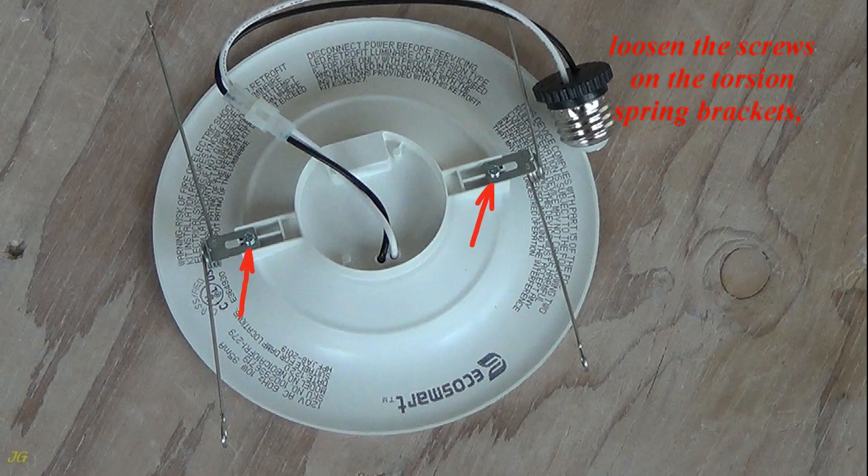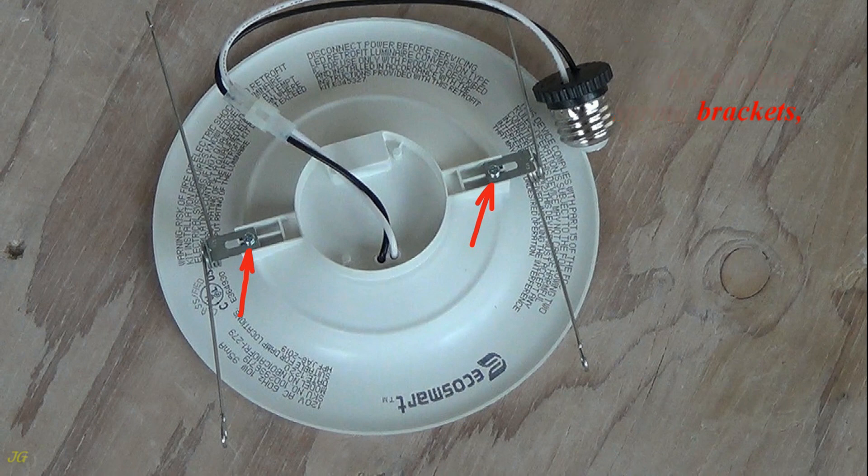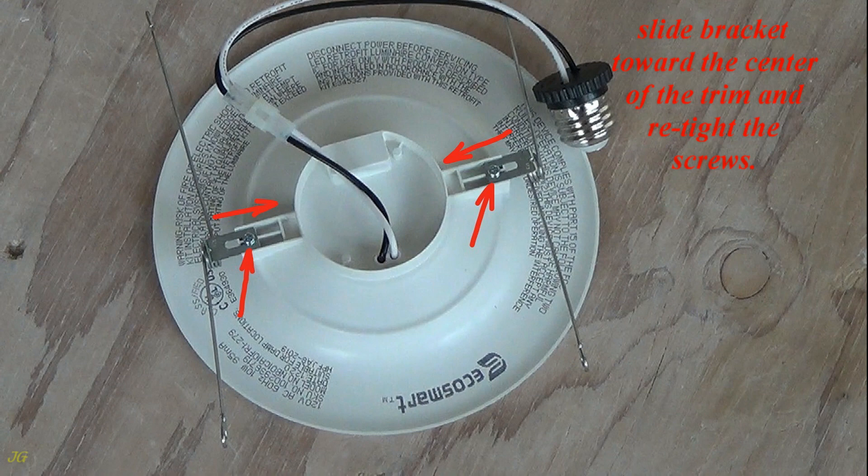Loosen the screws on the torsion spring brackets. Slide bracket toward the center of the trim and retighten the screws.